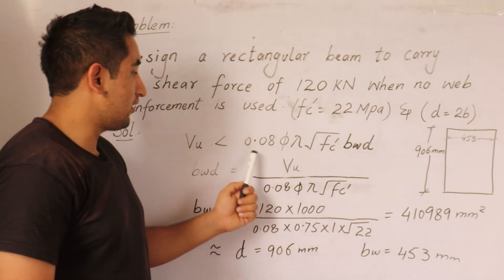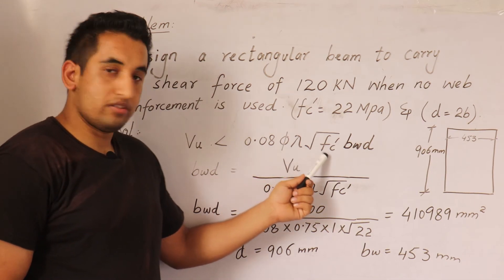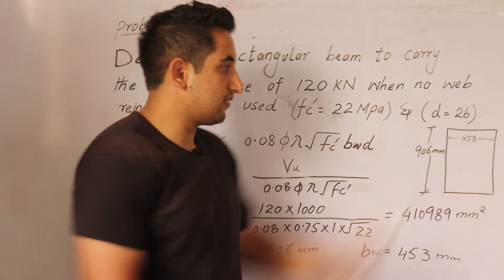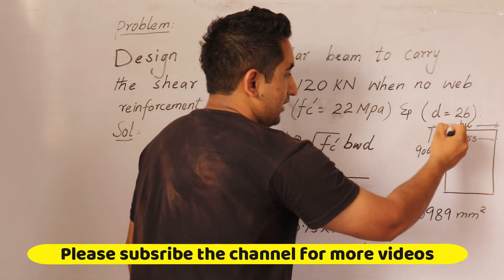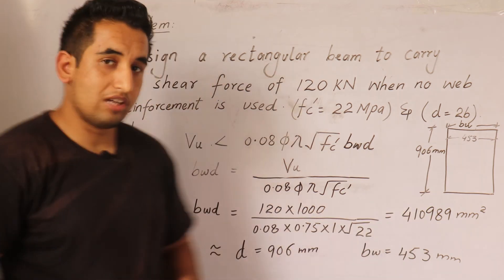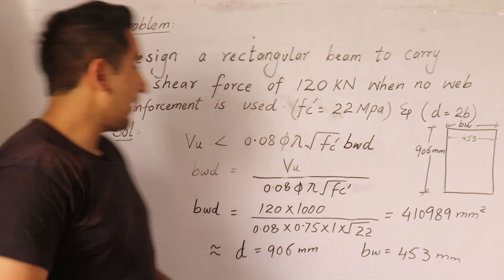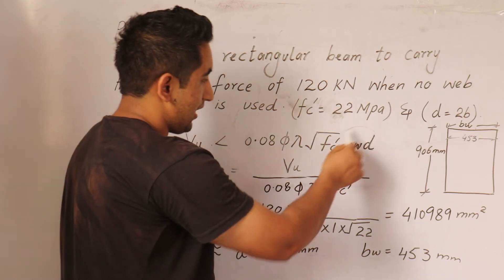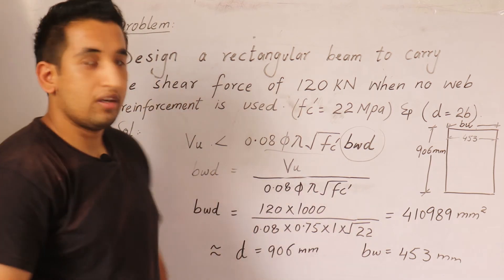Let me describe these factors: phi is the strength reduction factor, lambda is also a factor, fc' is the 28-day compressive strength, BW is the width of the beam that has to be calculated, and D is the depth. We have to design the cross-section that could resist the shear force of 120 kilo Newtons. We can get the cross-section by rearranging and dividing the factor to the left side.